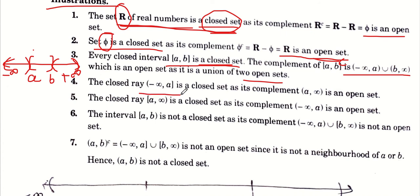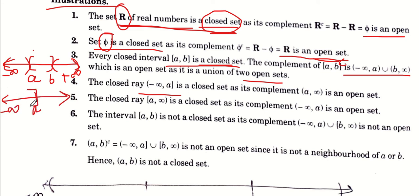अब हमें prove करना है: set (-∞, A] closed होगा। ध्यान से देखिए कि (-∞, A] का complement निकालें तो (A, ∞) open set आता है। अब क्योंकि ये open interval है, इसलिए open set है, तो (-∞, A] closed हो जाएगा।